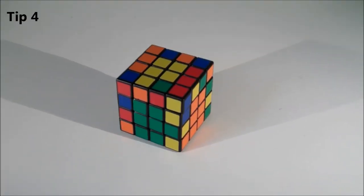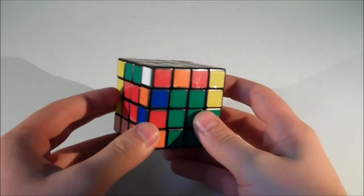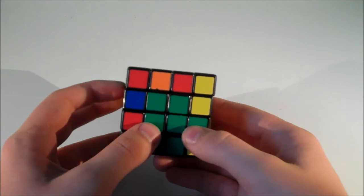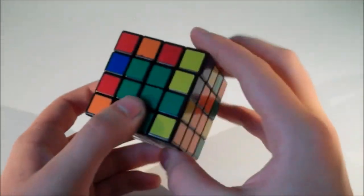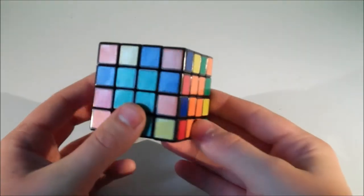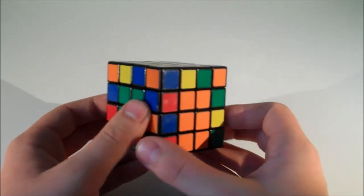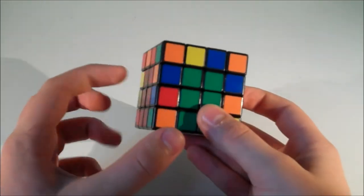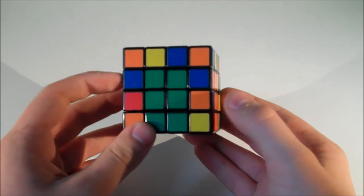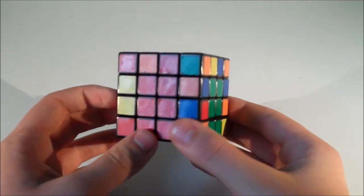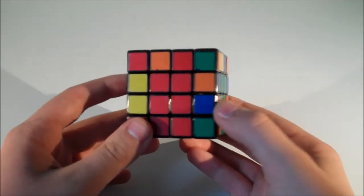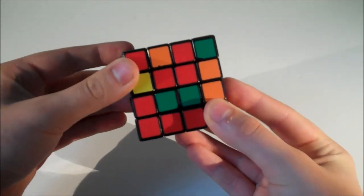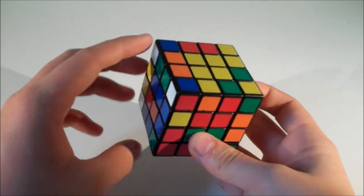So the last tip that I have for you guys is also during edge pairing, and this is when you need an edge that is already in use while trying to pair up. For example, I want to start by matching up the orange and blue, so I find the orange and blue edge which is up here, so I put it down. Then I see the next edge which is red and blue, so I find the red and blue but that's down here and we can't use this edge because we're already using it to match up these two edges.